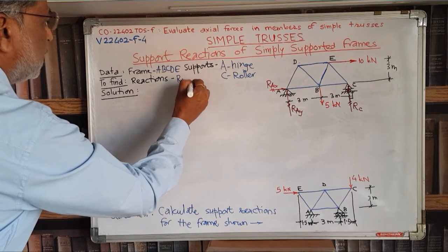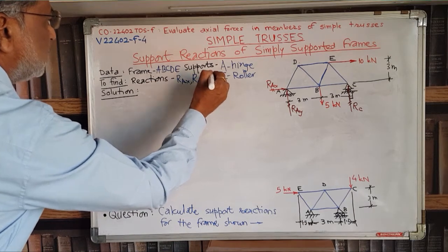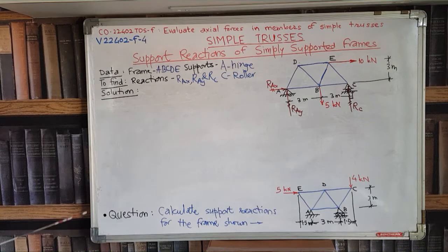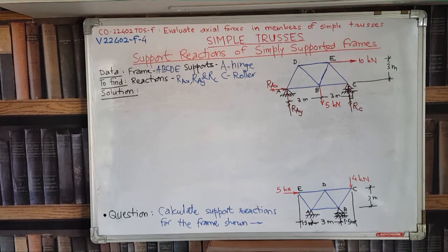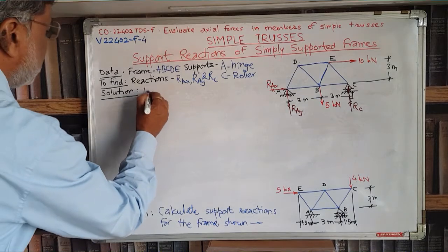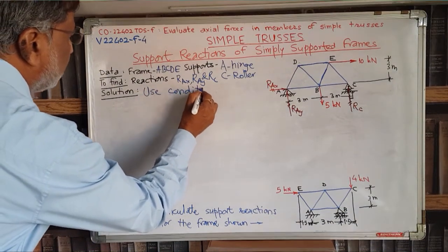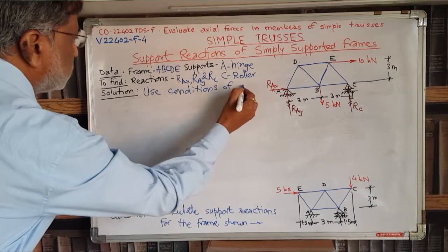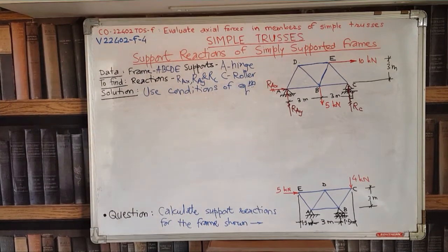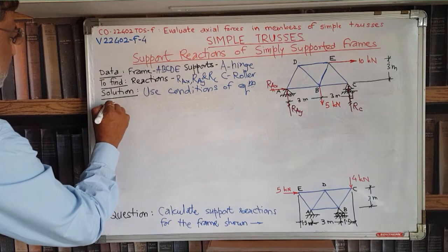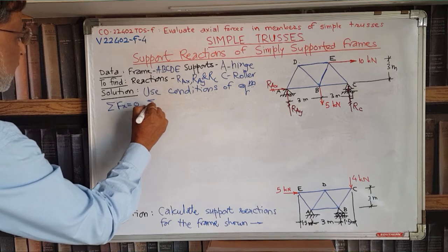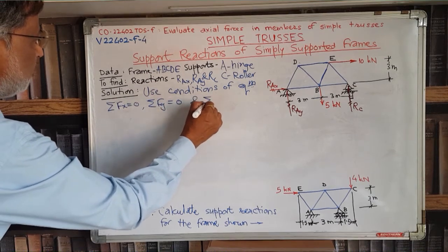These are the things to be found out. Now we will go to the solution. The method we are going to use is the conditions of equilibrium — the same method used since first year applied mechanics. There are three conditions of equilibrium: Sigma FX equal to zero, Sigma FY equal to zero, and Sigma M equal to zero.